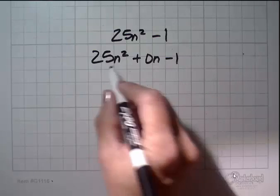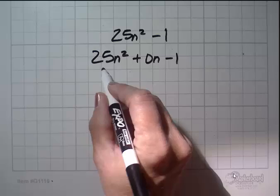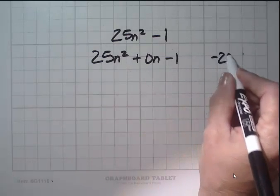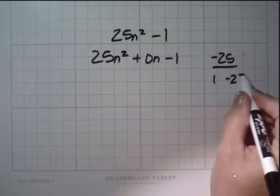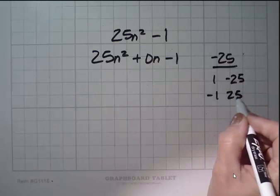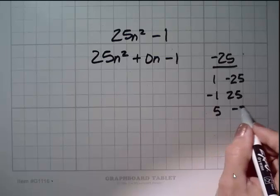And because your lead coefficient isn't 1, you multiply these two together. Remember, the sign stays with the number, so that is a negative 1. 25 times negative 1 is negative 25. And what are my factors of negative 25? They're 1 and negative 25, negative 1 and 25, and 5 and negative 5.